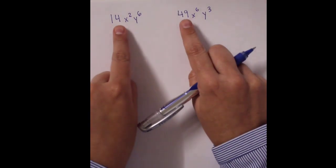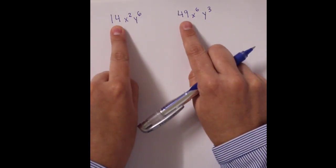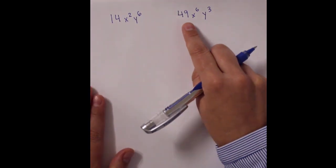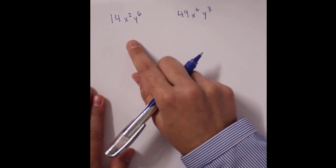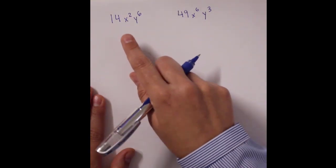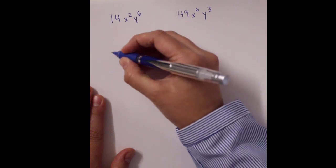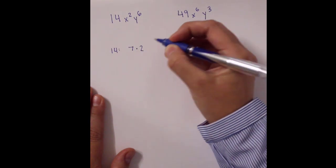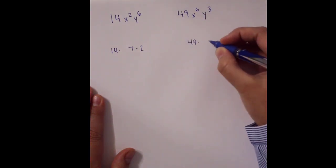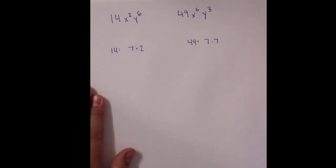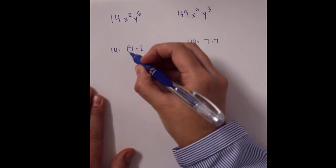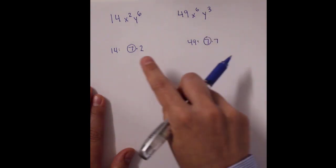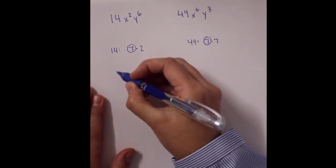I always start with the numbers. For 49 and 14, think about what numbers go into those — you can use a multiplication table if that helps. 14 is 7 times 2, and 49 is 7 times 7, so they both share a 7. Hopefully that wasn't too bad. Sometimes we have to break down the numbers quite a bit, but so far they share a 7. Let's move on to the x's.